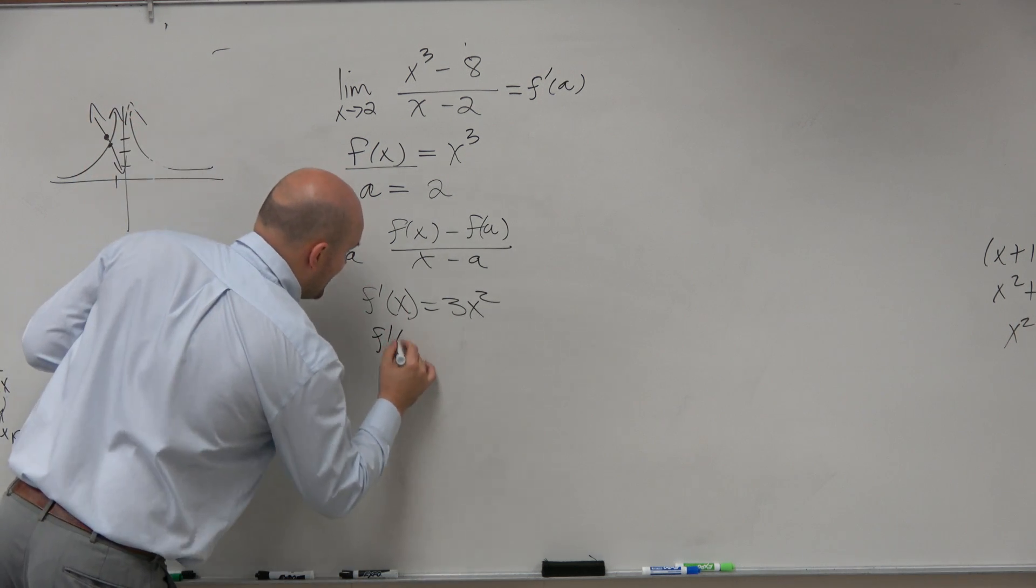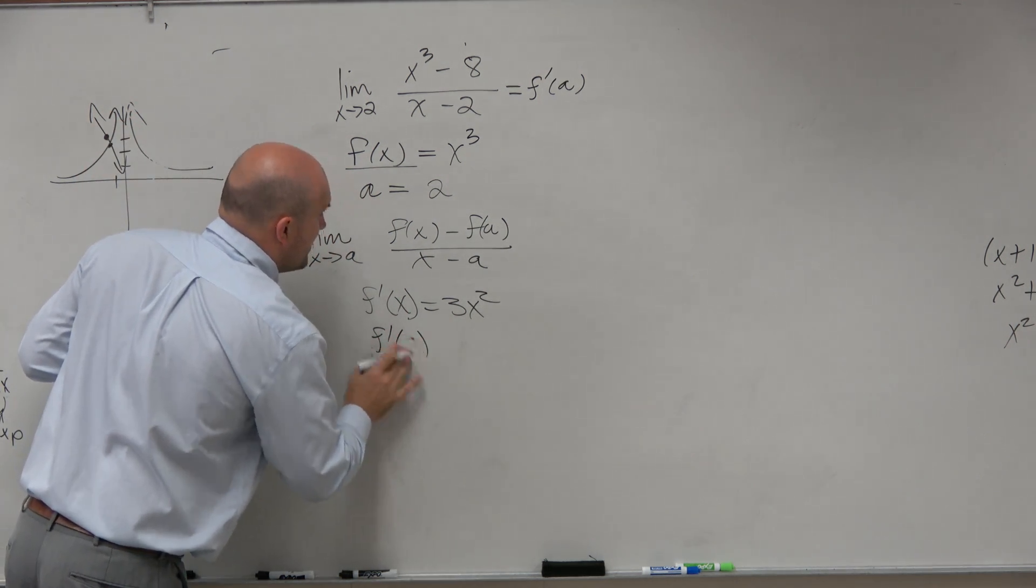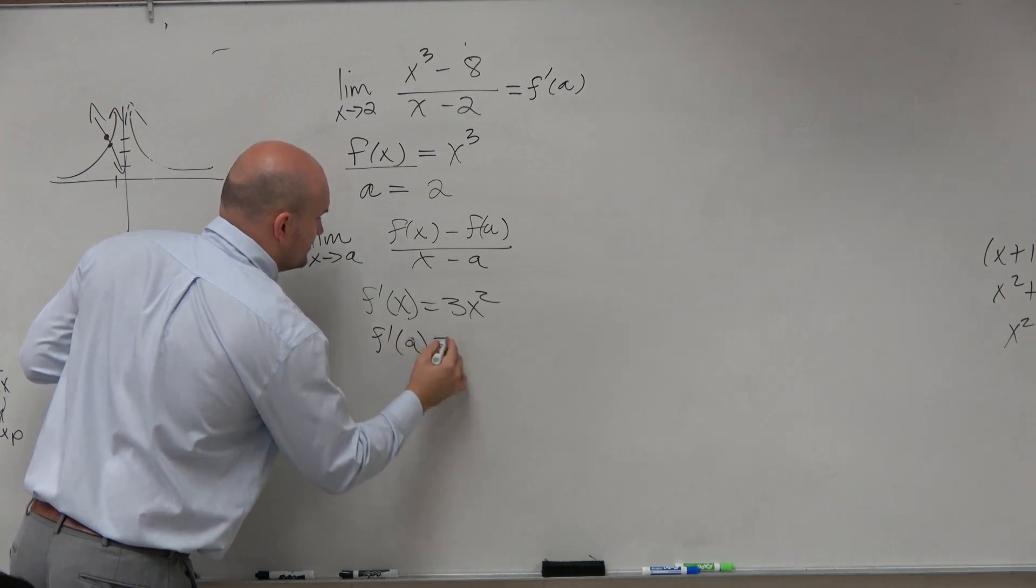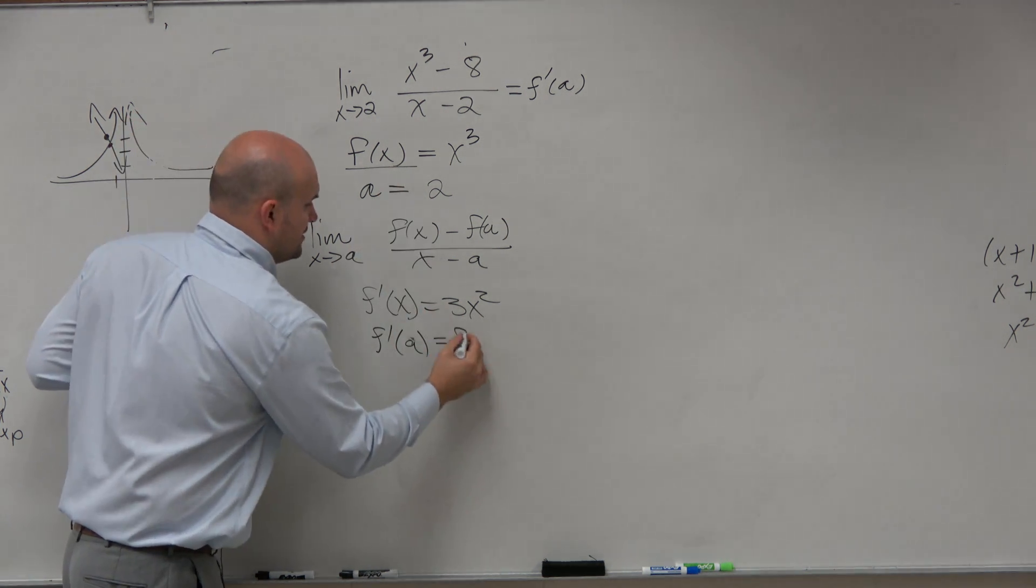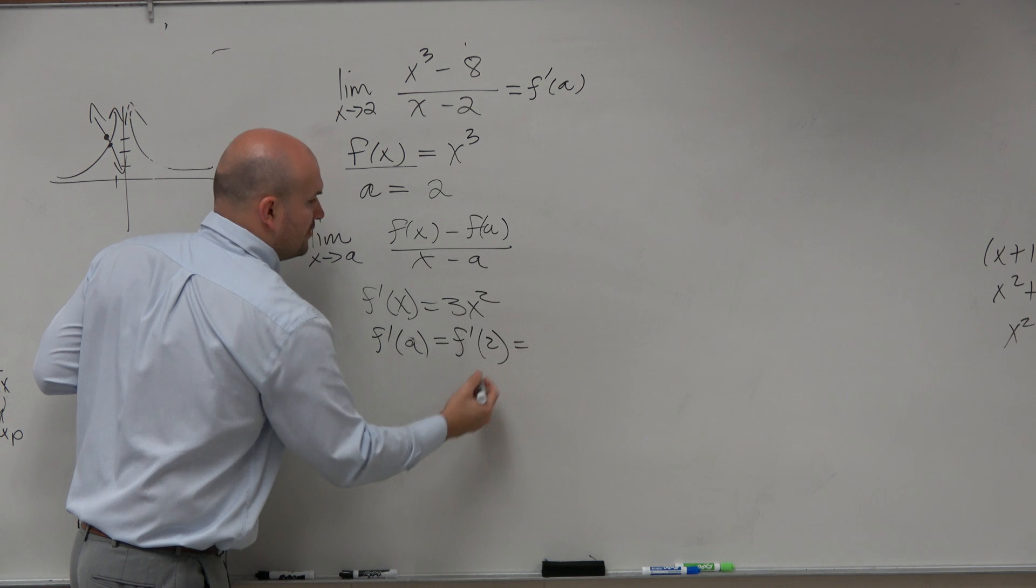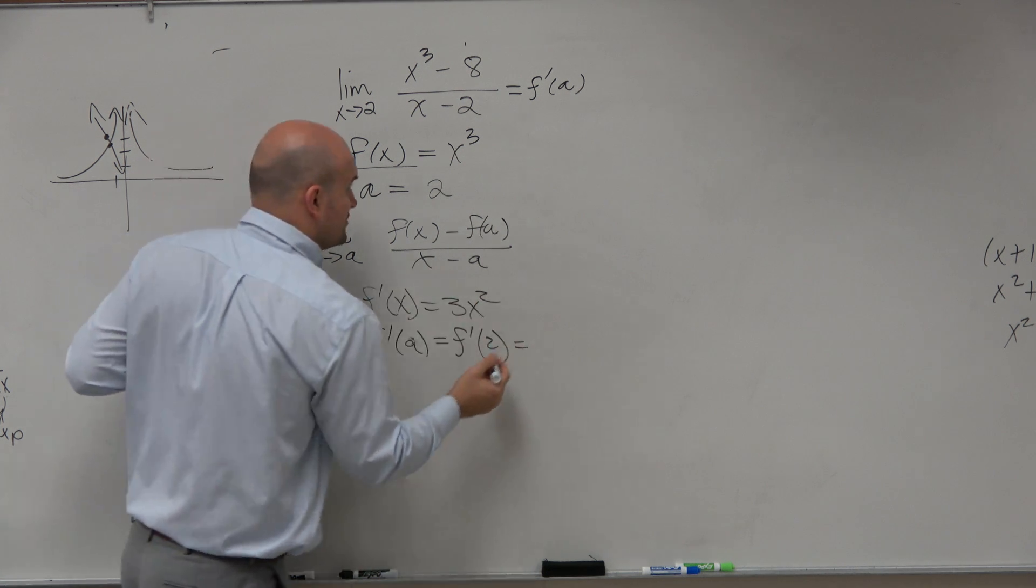Now that we know what f of x is, can I find f prime of a, which in this case is really f prime of 2, which is 2 squared is 4 times 3, which is going to be 12.